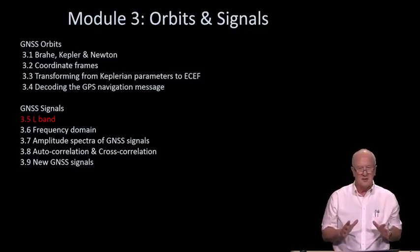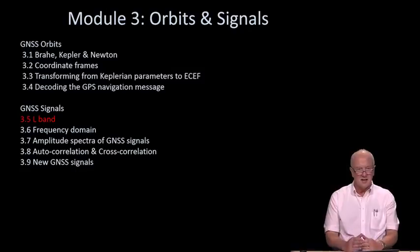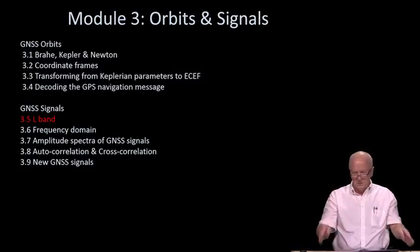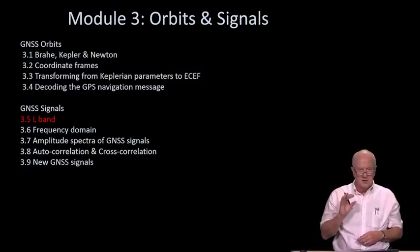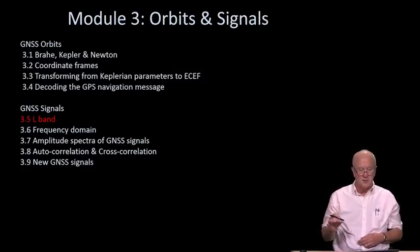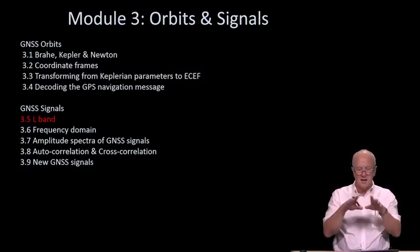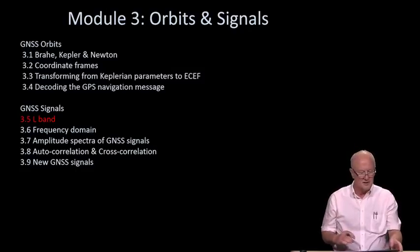You will see over and over again in the discussion of GNSS a function that's called the sinc function, or sine x over x. For all the world, it looks like a central bump with little side lobes going out from the side of it, and it's really important that you know where that comes from. So in this snippet I'm just going to talk about L-band and get you a little bit oriented. And in the next snippet, 3.6, we'll talk about that sine x over x ever-present function that describes the frequency domain of the GNSS signals.